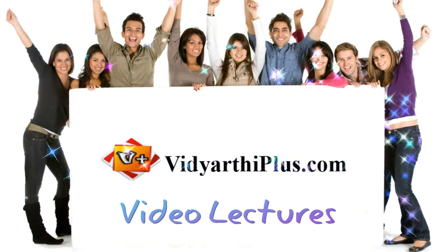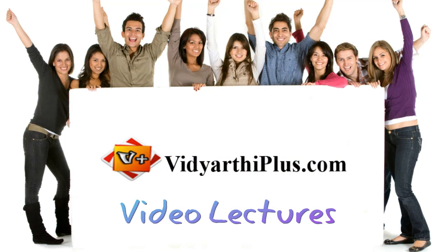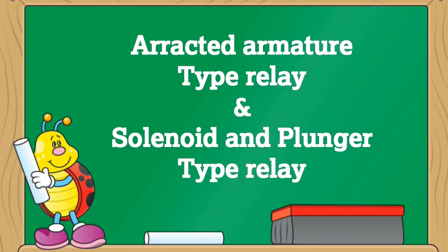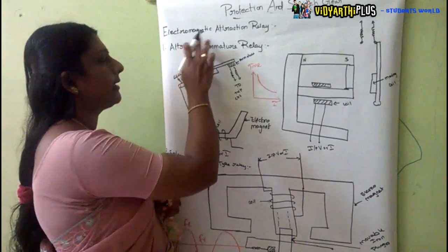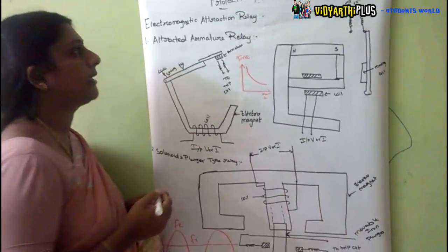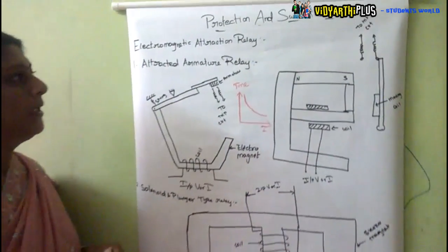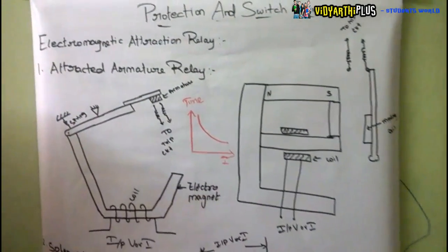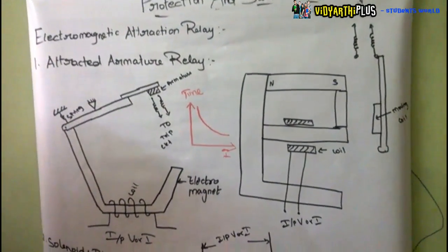Welcome to Vidyadi Plus video lectures. In this session you will learn about Attracted Armature Type Relay and Solenoid Plunger Type Relay. We will now see the types of electromagnetic relays. The first one is the Attracted Armature Type Relay.